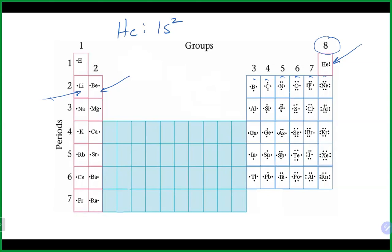An important thing as we go through bonding: hydrogen should only have two electrons when you are doing bonding. That's because hydrogen only needs to get to helium in terms of its electron configuration. So hydrogen should only have two electrons total in bonding, never more than two — don't put a bunch of dots on hydrogen because it will definitely be wrong.